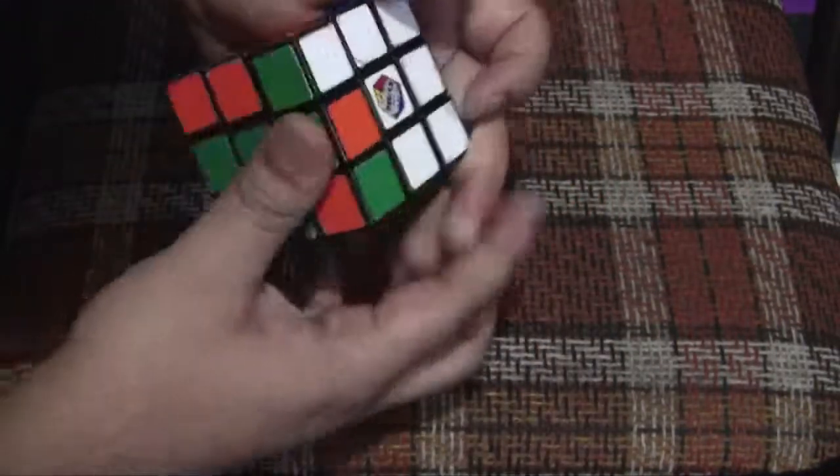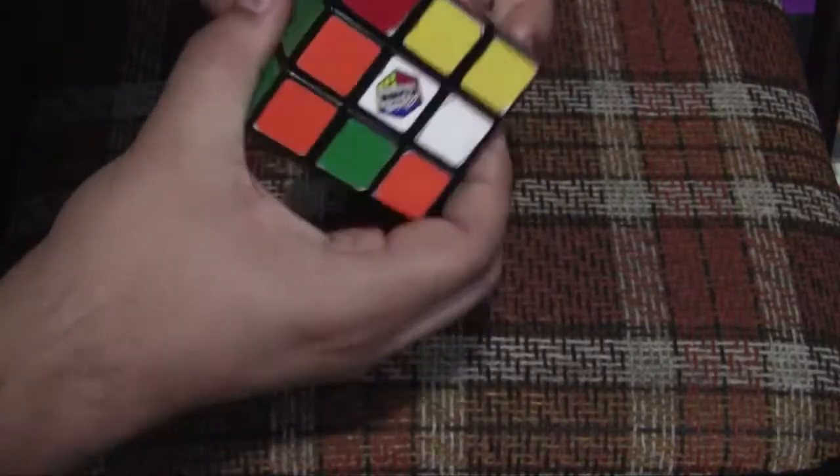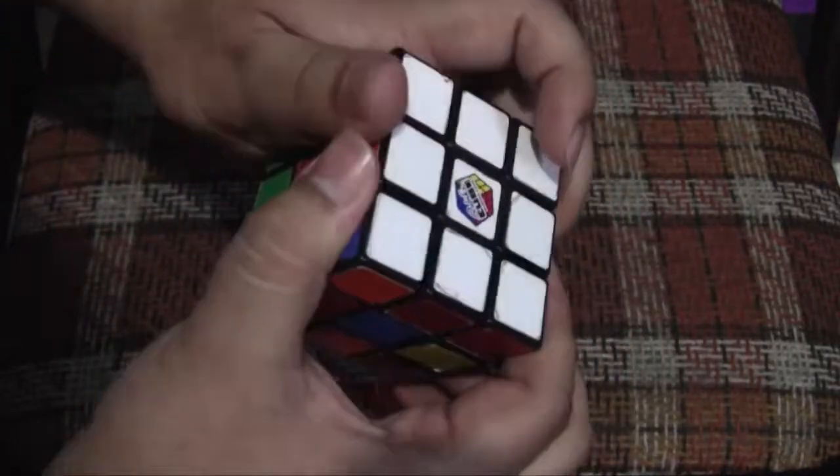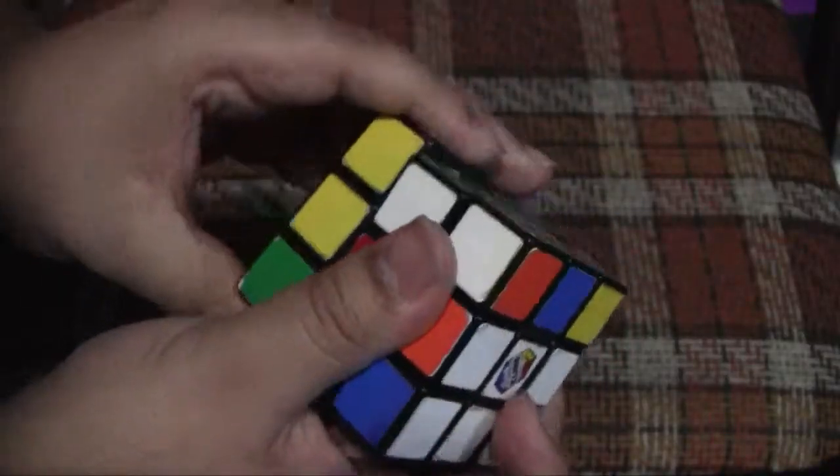However, mathematicians took the cube with them to international conferences, and a toy entrepreneur took the cube to the Nuremberg Toy Fair in 1979. It was here where Tom Creamer agreed to distribute the toy to the rest of the world and later struck a deal with Ideal Toy Company.